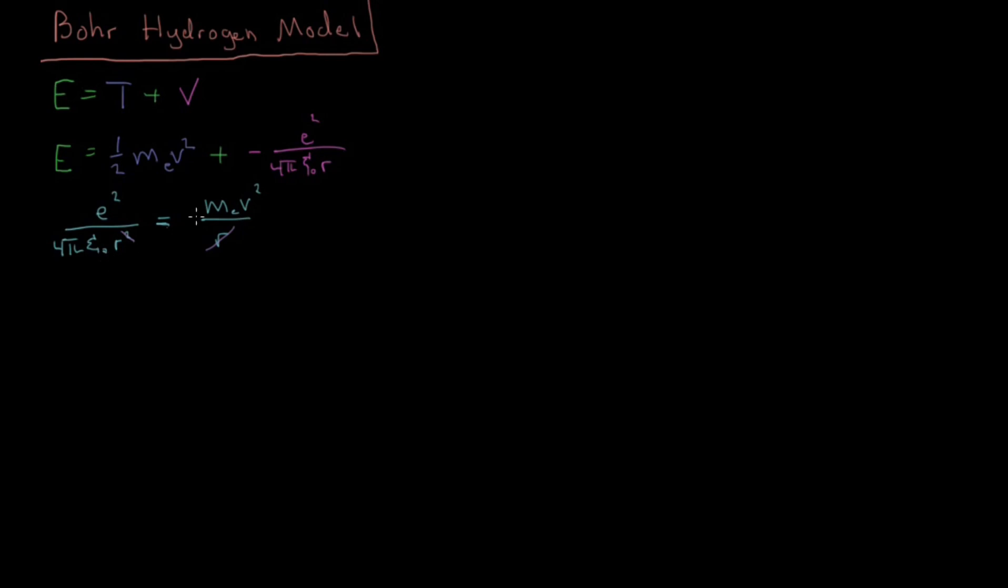We can see we have this MeV squared that we have up here. Let's substitute this value into the total energy equation. Our total energy is just going to equal one-half this quantity E squared over 4 pi epsilon naught R minus one times the same value, which gives us minus E squared over 8 pi epsilon naught R.